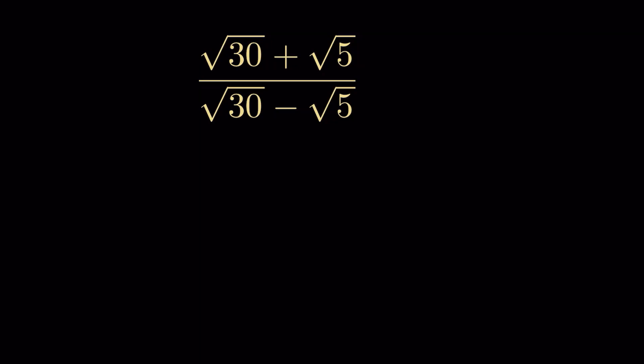We have (√30 + √5) / (√30 - √5). How do we simplify this? To simplify it, we need to remove the square roots from the denominator.